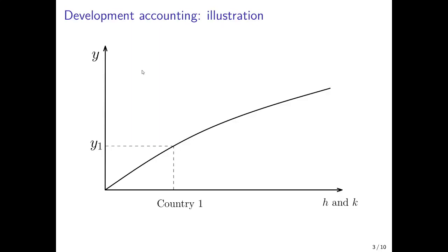We can depict the intuition behind development accounting graphically. In contrast to growth accounting, we don't observe one country over time, but we observe multiple countries and compare them to each other. If we start with country one, and country one has the rival accumulable input factors — human capital and physical capital — at a certain level, then we can read off the level of per capita GDP at the production function.